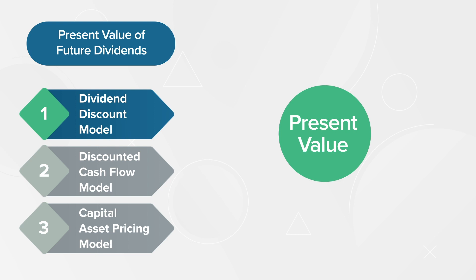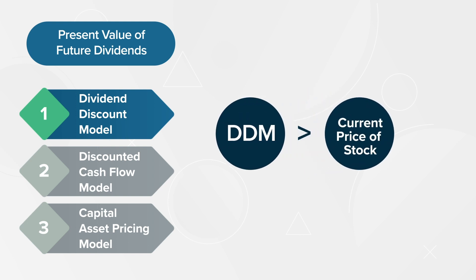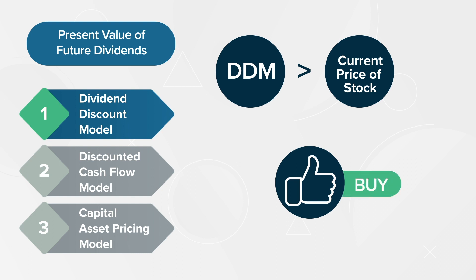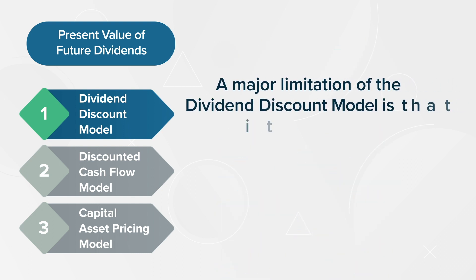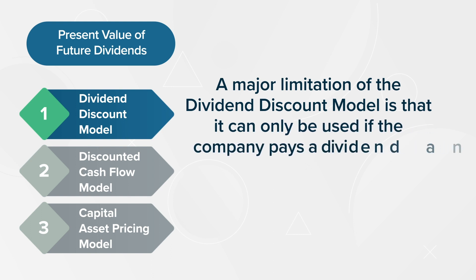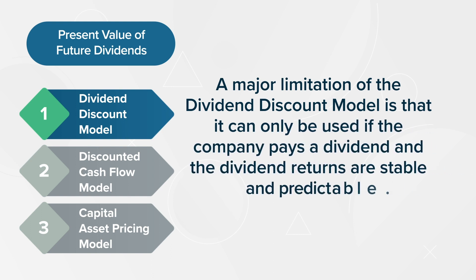If the present value of future dividends, calculated by the DDM, is greater than the current price of the stock, then the DDM suggests it is a buying opportunity. A major limitation of the Dividend Discount Model is that it can only be used if the company pays a dividend and the dividend returns are stable and predictable.